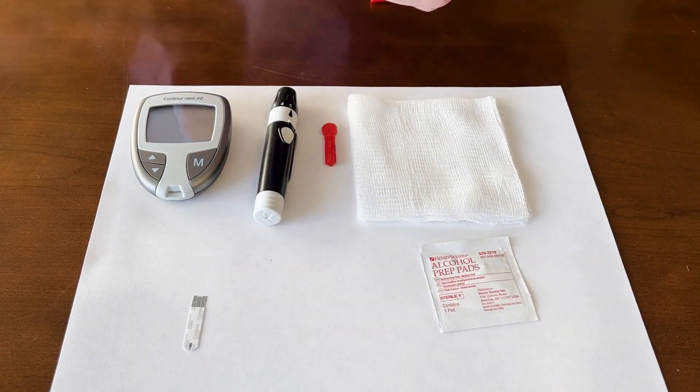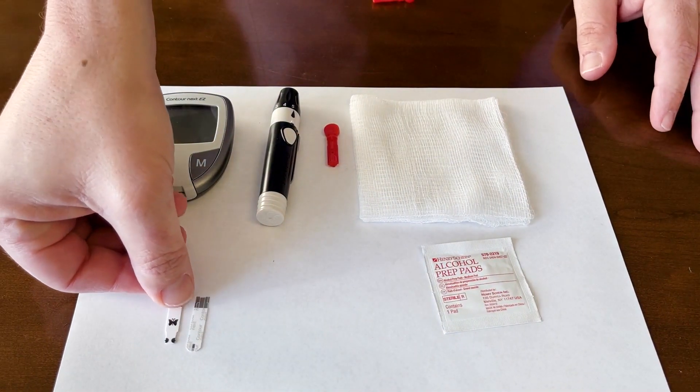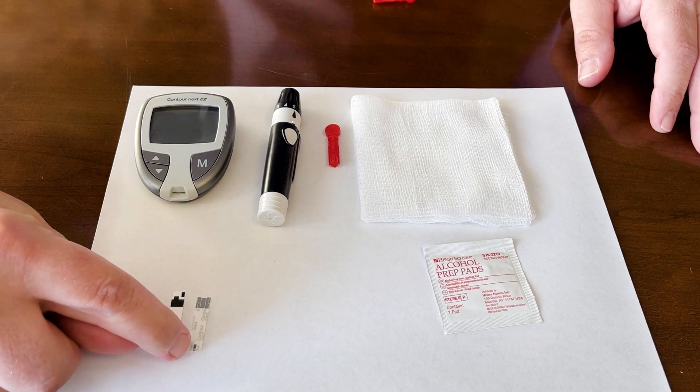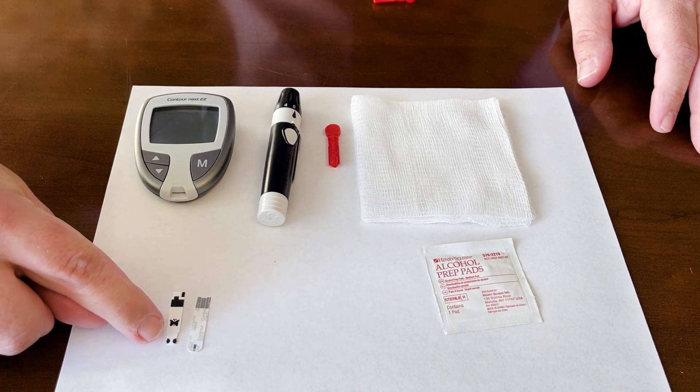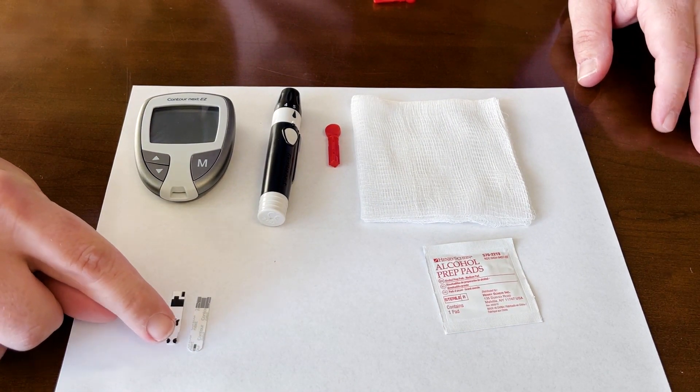First I like to talk about strips. There's different kinds of strips. I've got two here, some where you put the blood at the very end, and then like this strip here, you can put it onto the sides.